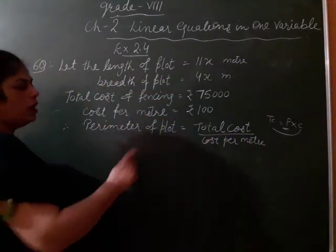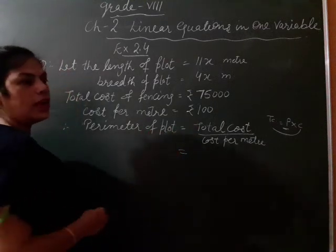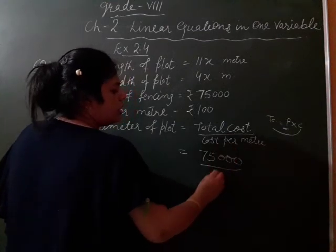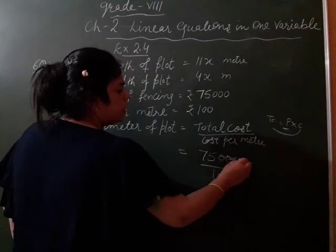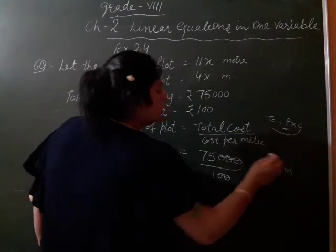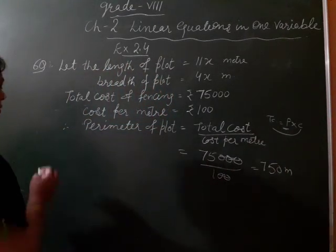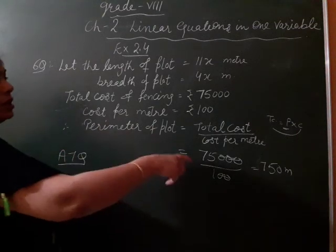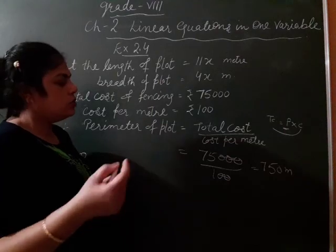So, that is its formula. Total cost kya ban jayegi? 75,000 over 100. So, zero se zero kat gaya. What is our perimeter? That is 750 meter. According to the question, we have perimeter and we have dimensions also, length and breadth.